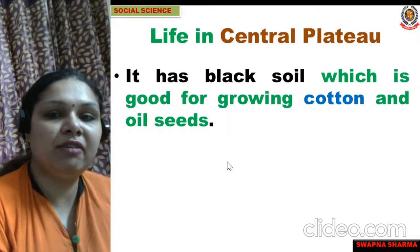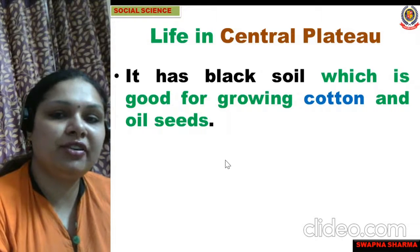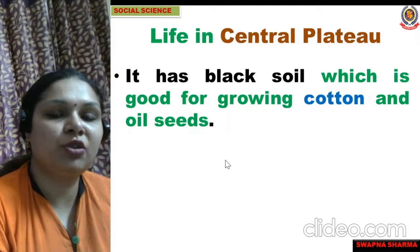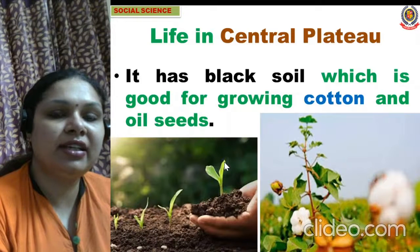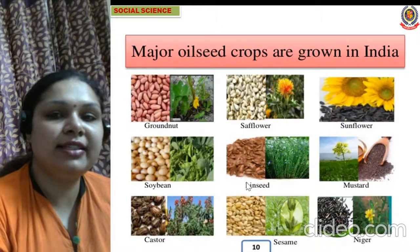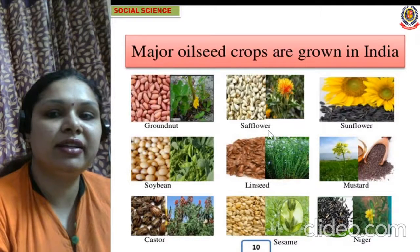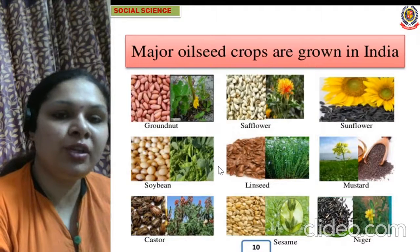In the Malwa plateau there is black soil, which is good for growing cotton and oil seeds. Oil seeds are seeds from which we can extract oil - like mustard oil and soya bean oil. Major oil seed crops grown in India include sunflower, safola, groundnut, and soya bean. These are all oil seeds grown in the black soil of this region.